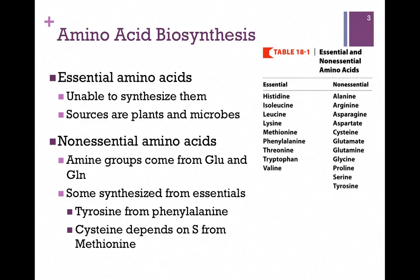Here's a table from your book listing those amino acids that are essential on the left. These we're unable to synthesize, and so our sources are plants or microbes in our gut. On the right are those that are non-essential — that is to say, not that we don't need these amino acids, but simply that if they are not supplied in our diet, we can make what we need.